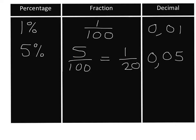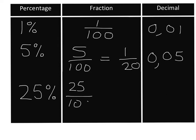Try this for yourself: take 25 percent and write it as a fraction over a hundred, then as a decimal, then see if you can simplify that fraction. Pause the video now and do this in your homework book. You should have said 25 percent means 25 over a hundred, and turning that into a decimal is very easy — it's 0.25.